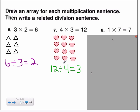This same concept can be represented with the division sentence. Twelve divided by four equals three can be used to represent this array, because I have twelve hearts in all, divided into four rows, which equals three hearts in each row.